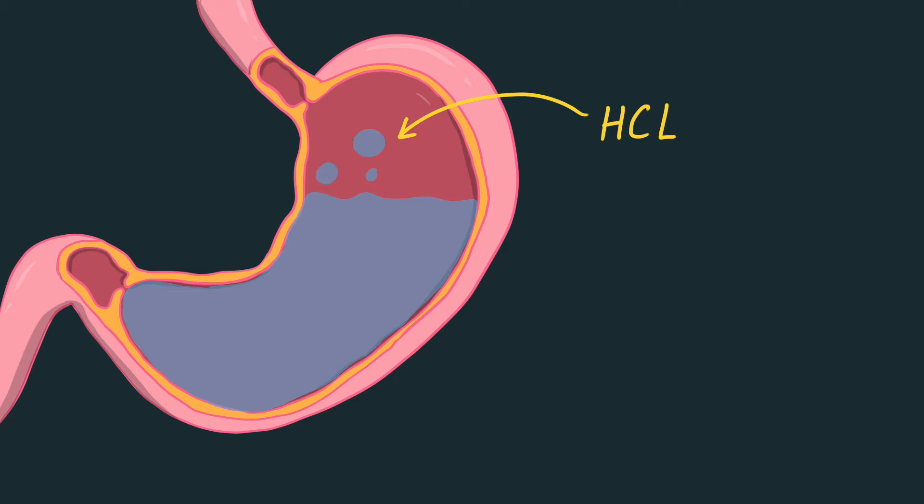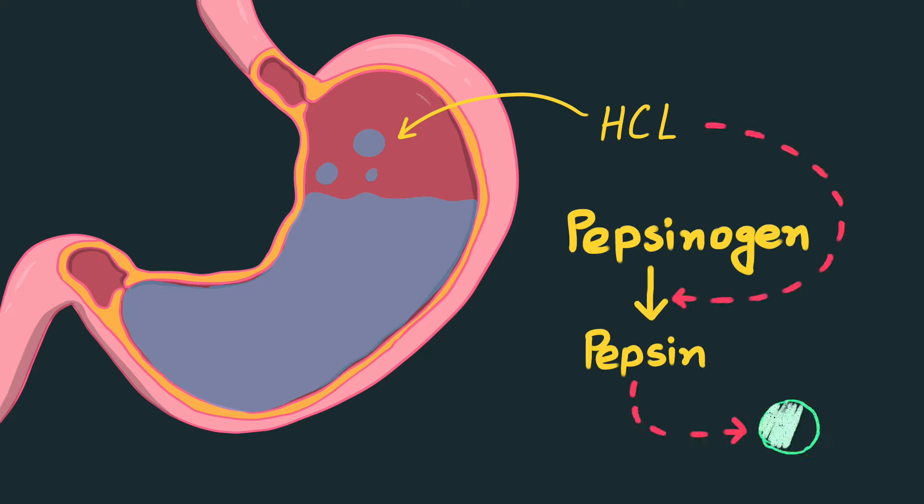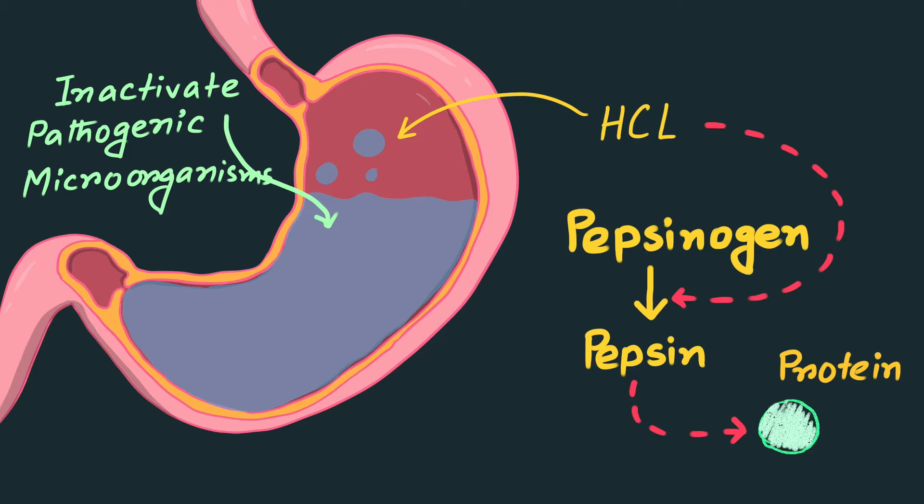HCL mainly creates an acidic environment in the stomach which helps pepsin to work and aid in protein digestion. It also helps to inactivate pathogenic microorganisms and protect us from infection. Now HCL is produced by parietal cells of the stomach, which are also called oxyntic cells.